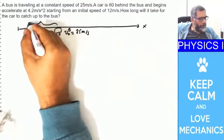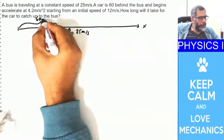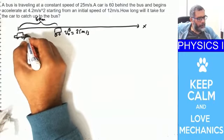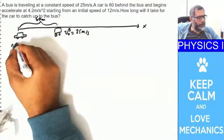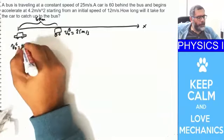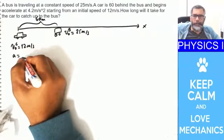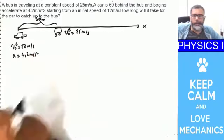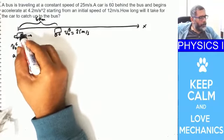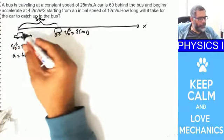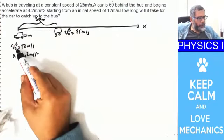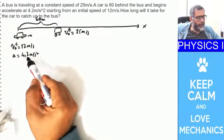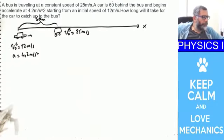A car is 60 meters behind a bus. It starts its motion with an initial velocity of 12 meters per second and a constant acceleration of 4.2 meters per second squared. It will try to catch the bus but starts 60 meters behind, initially at a velocity of 20 — sorry, the bus goes at a constant speed of 20 meters per second, and the car's speed is increasing at 4.2 meters per second each second.